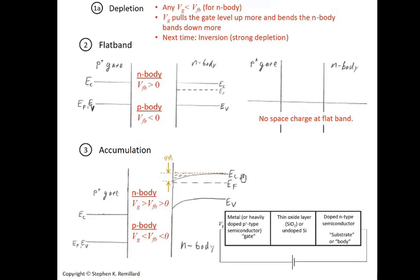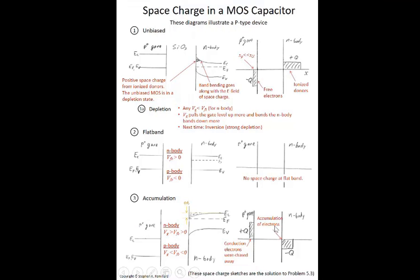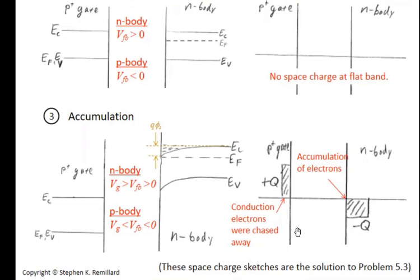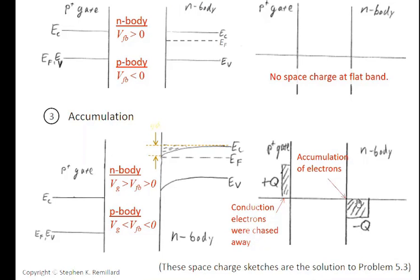And finally, the space charge distribution for accumulation. In that case, we have negative space charge on the body, but that's not due to the donor ions now. That's due to the accumulated electrons that rolled downhill and took up camp right here at the interface. Because you have a bunch of electrons accumulated at this interface, over here at the other interface between the insulator and the metallic gate, free electrons are chased away.